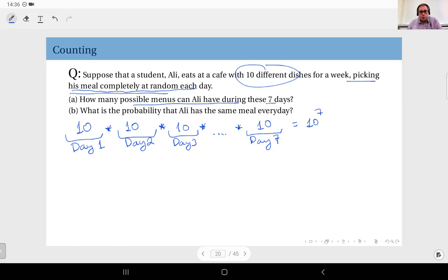Why did we do that? Because here we are distinguishing between the orders. For instance, on day one, let's say he selects dish number one. And in the remaining days, he selects dish number two. This is one possible menu. But for instance, assume that on day one, he selects dish number two. And on day two, selects dish number one. And in the remaining days, he again selects dish number two. So when you look at the number of dishes.